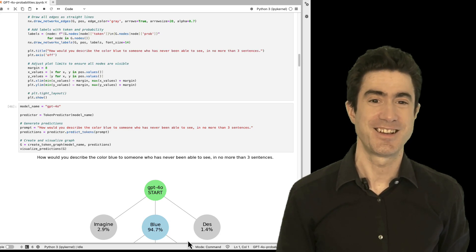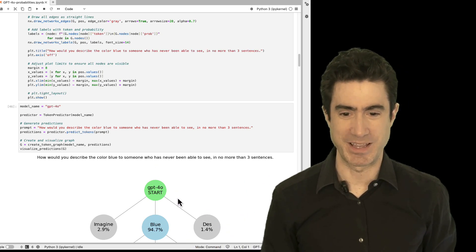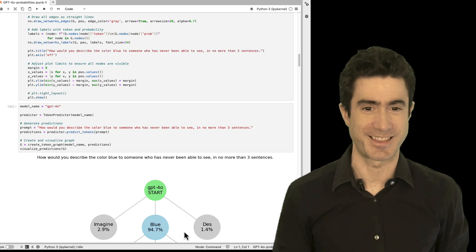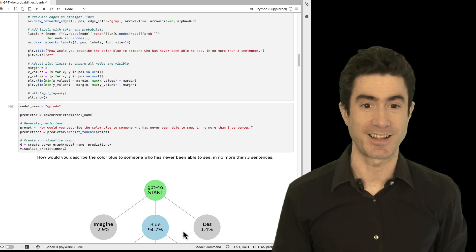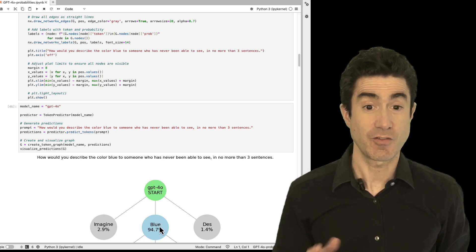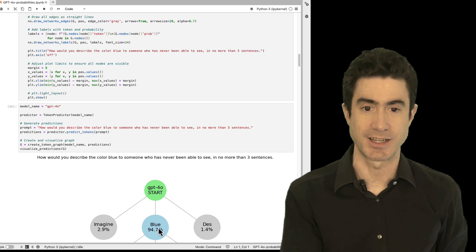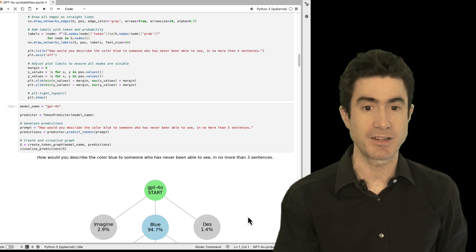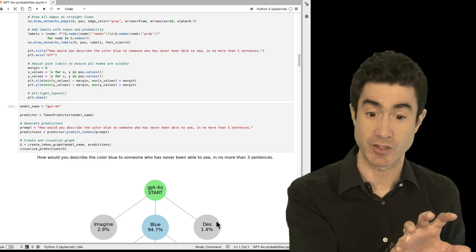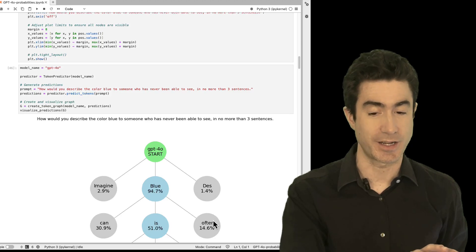And then the third one might surprise you it's the word DES and you might be wondering what on earth is that about. Well remember these are tokens not necessarily words and some tokens represent fragments of words a bunch of characters and that DES I imagine is a piece of describe because that would again be answering this or describing or something like that is what it thinks is a likely response to this question the way it's stated. So the word blue is the most likely word and so blue is the one that's selected and then the question is put back into GPT with blue at the end of it as the beginning of its response and now it has to generate the next token and this is what it comes up with.